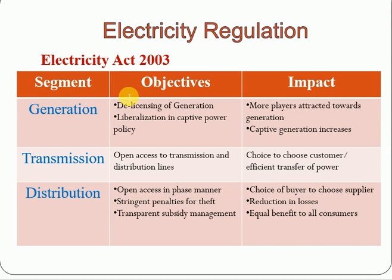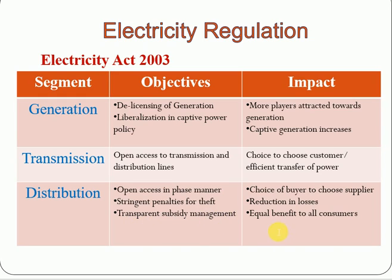After that, the Electricity Act 2003 came, which covers three segments: generation, transmission, and distribution. In generation, the objective is de-licensing, which attracts more generators, and liberalization in captive power, which increases generation capacity. In transmission, open access to transmission and distribution lines gives customers the choice of efficient transfer of power. In distribution, the objectives are open access, giving buyers the choice of supplier; stringent penalties for theft, which reduces losses; and transparent subsidy management, ensuring equal benefit to all consumers.